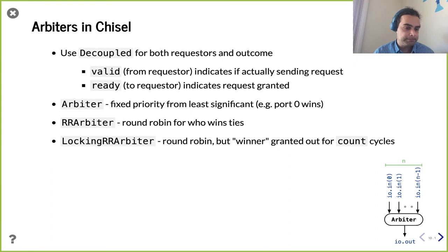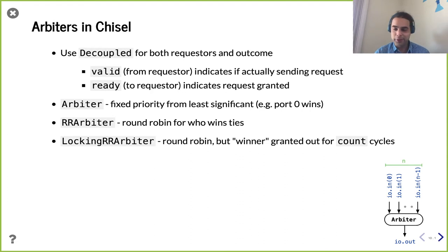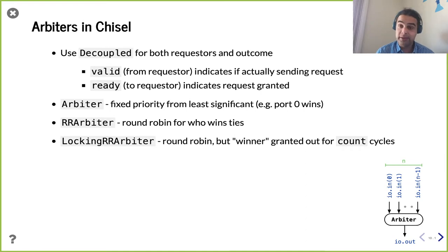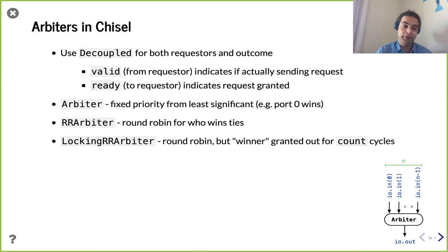Chisel provides these inside the util libraries. We don't need to write our own, but we're going to as an exercise. How do these arbiters work? They use the decoupled interface — this appears all over the place, not only in standard library components but also probably often in your own components. When an input asserts its valid signal to one, they're saying 'I have a legitimate request.' Sometimes they aren't making requests and can mark valid as zero. The arbiter looks at the collection of ballots coming in and decides based on arbitration logic which person gets the grant.